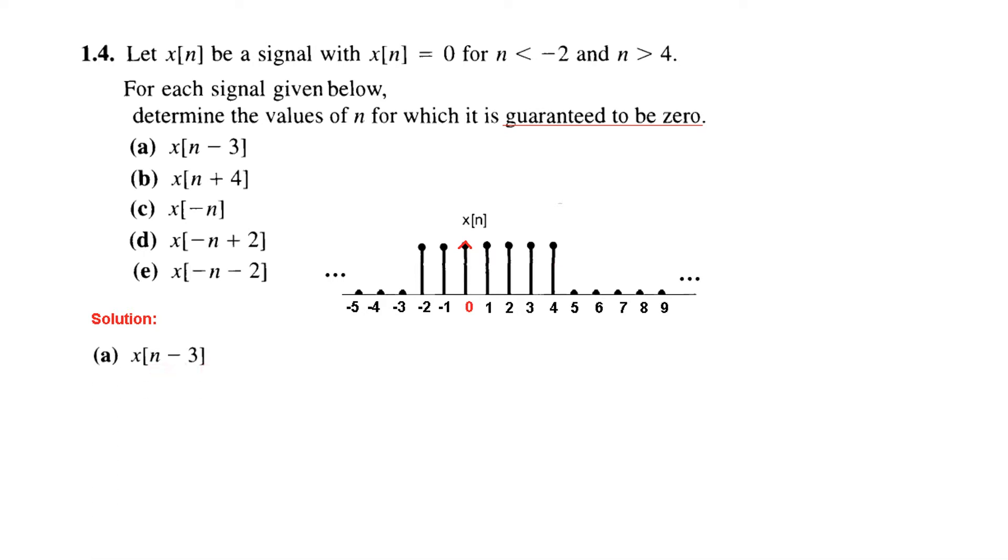So x[n minus 3] actually means we put this equal to 0. So n minus 3 equals 0 we get n equal to 3. That means we have to move the whole signal in such a way that this hat comes at 3. So we move the signal so hat comes at 3. And now from here we can see where is the 0. It is 0 for n less than 1. So we write for n less than 1 it is 0 and from here you can see it is 0 for n greater than 7. So n greater than 7 the signal is guaranteed 0.